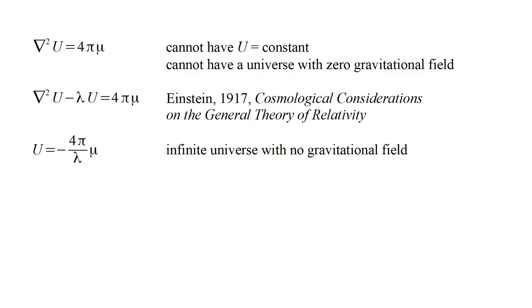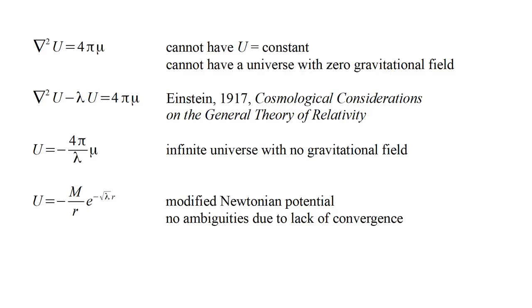Of course, the price we pay is a modification of Newton's law of gravity. The resulting modified Newtonian potential has an additional exponential factor, e to the minus square root lambda r. Of course, the unmodified potential describes our solar system very well. But for a given r, if lambda is small enough, the modification is negligible. So maybe the lambda term exists, but its effects only become important for cosmologically large distances. With this modification, the ambiguities in Newtonian theory disappear. We can call lambda a cosmological constant. As we'll see, Einstein proposed a cosmological constant for general relativity, a constant that is now associated with so-called dark energy.